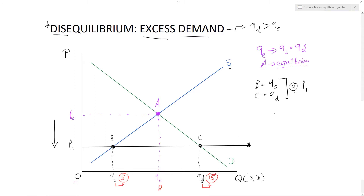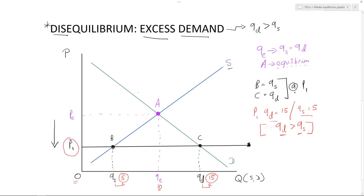At price 1, quantity demanded equals 15 and quantity supplied equals 5. Therefore at price 1 we have excess demand — demand is greater than supply, so we're in disequilibrium. The market is not equal. We are not at point A because the price is lower. Essentially, at this lower price, more people want the goods and services than suppliers are willing to produce. There's excess demand — too much demand.